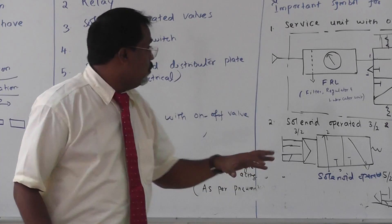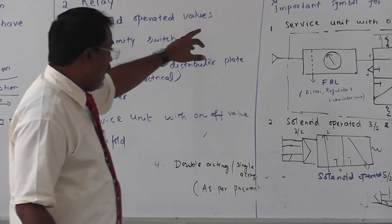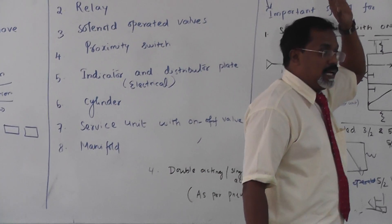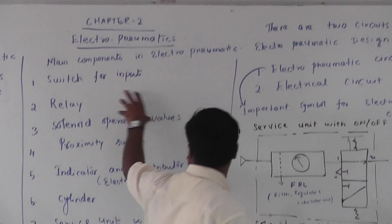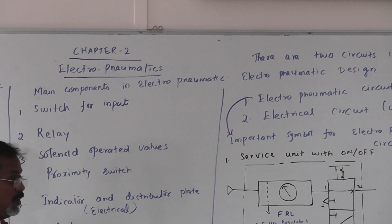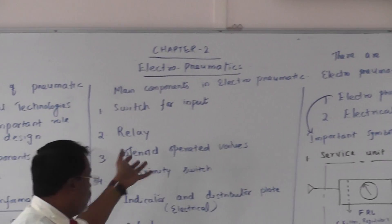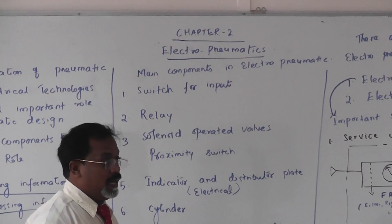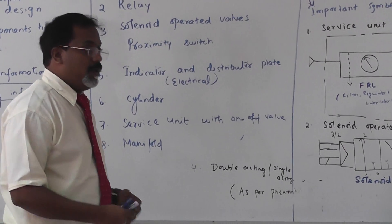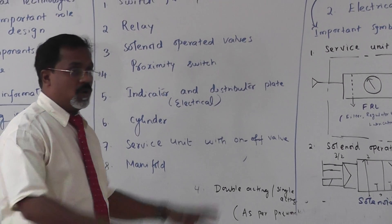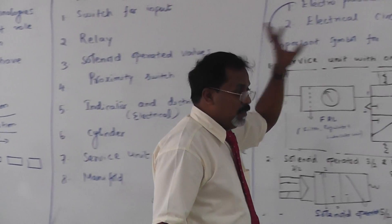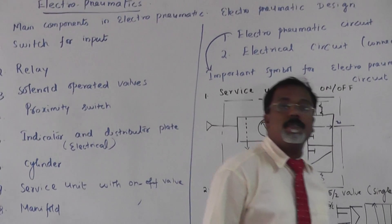Next, we will discuss the electrical circuit symbols — what is the symbol for a switch, what is the symbol for a relay, what is the symbol for a solenoid, and how to represent a solenoid operated valve using a relay. All those electrical symbols will be covered.